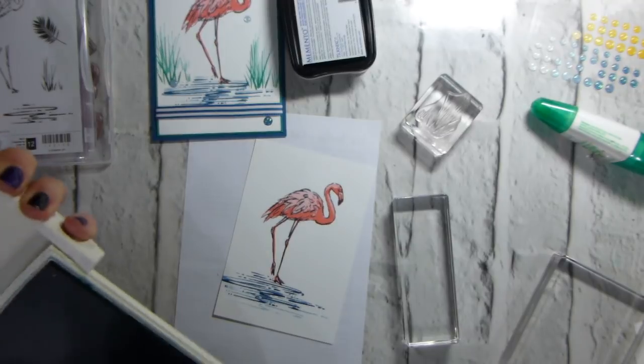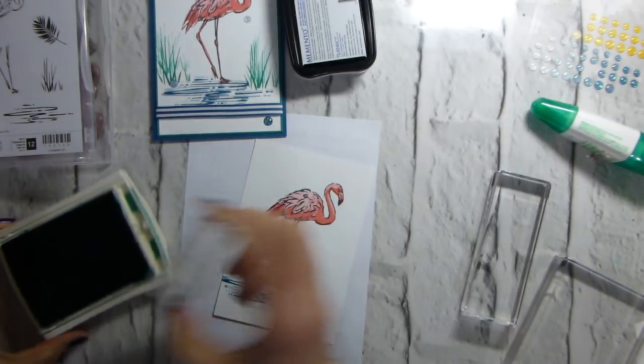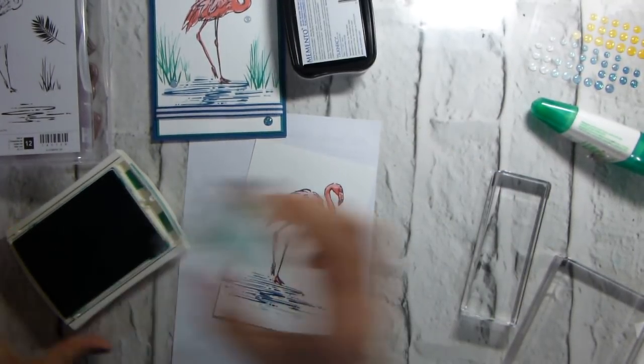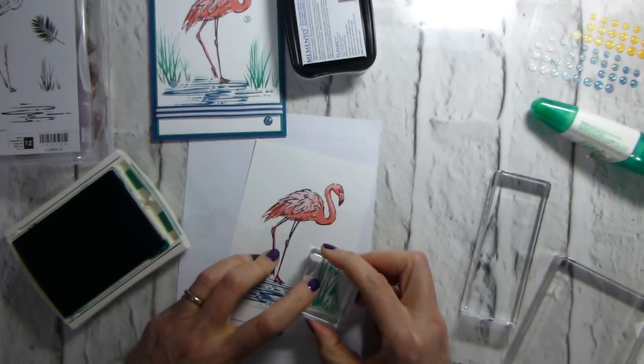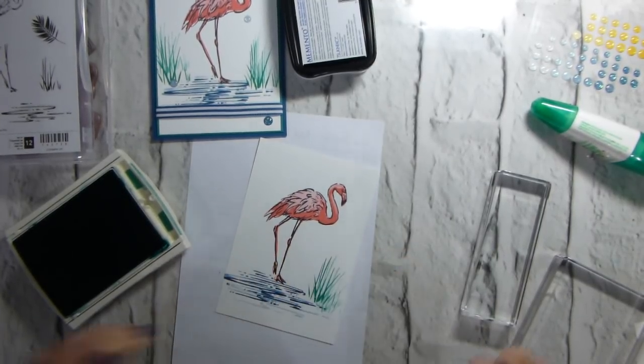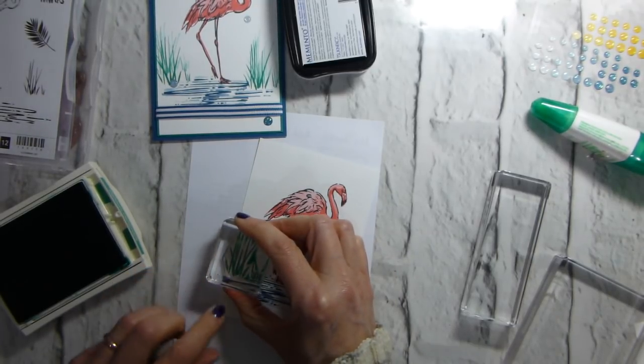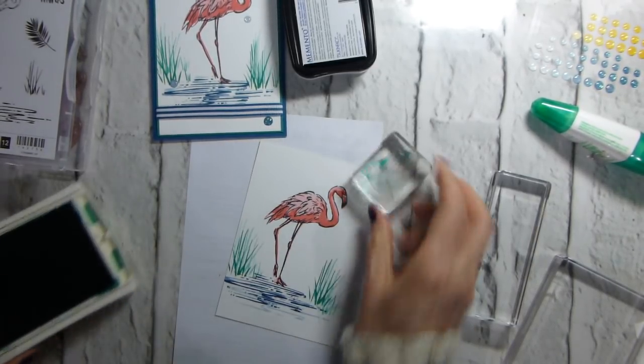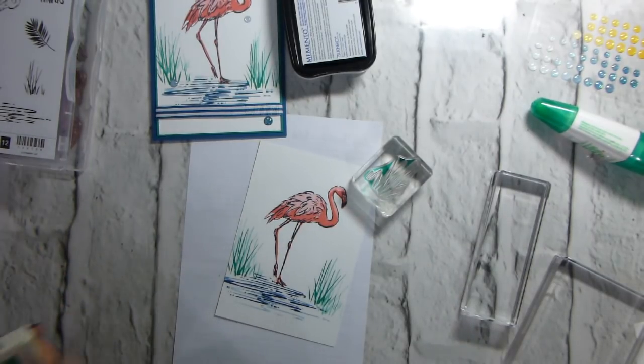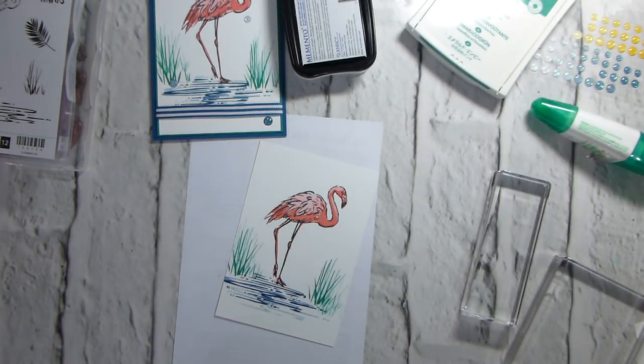Emerald Envy. So, we've done two colours. We're on our third. The grass, and again, I'm just going to go one, two, three, and just do some, I say grass. It's probably reeds, isn't it? So there are our reeds. Clean that off.